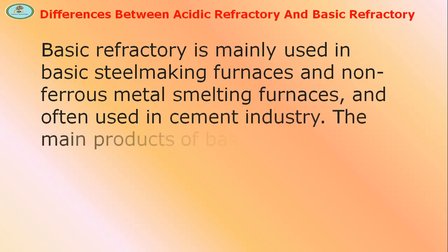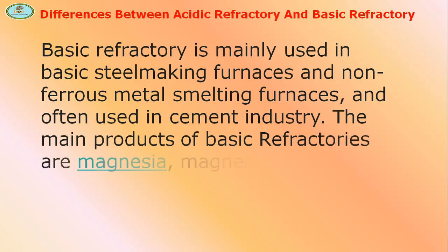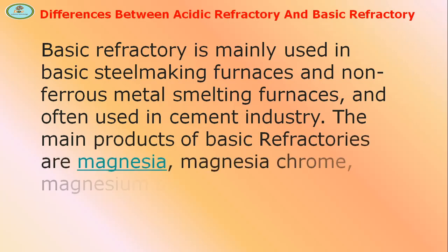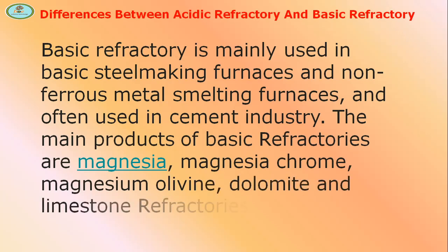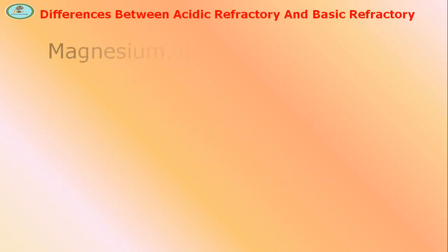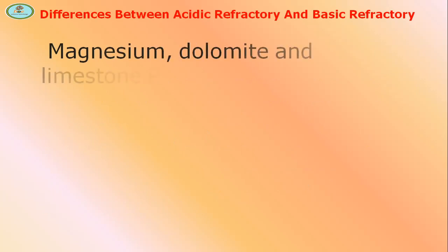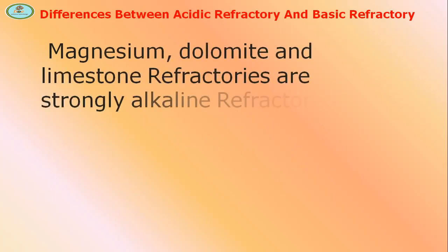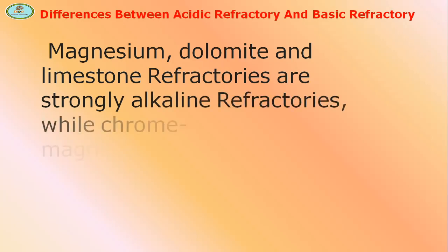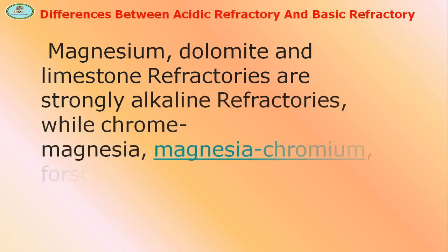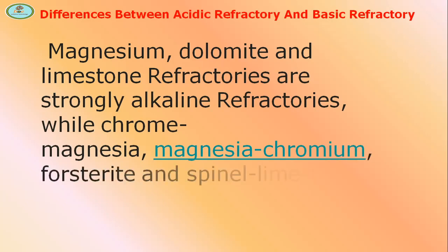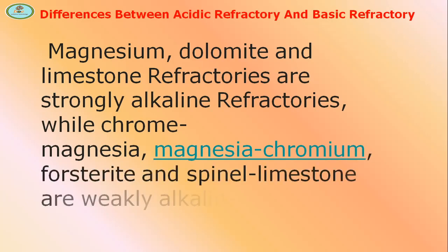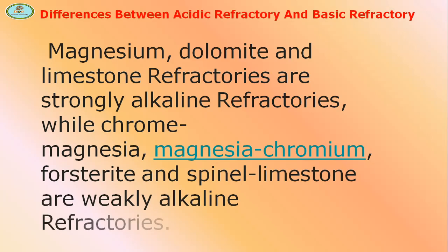The main products of basic refractories are magnesia, magnesia-chrome, magnesium aluminate, dolomite, and limestone refractories, which are strongly alkaline refractories. While chrome-magnesia, magnesia-chromium, forsterite, and spinel limestone are weakly alkaline refractories.